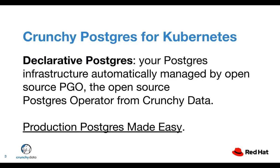Today we're going to be talking about Crunchy Postgres for Kubernetes, our Kubernetes-based solution for managing Postgres. We describe it as declarative Postgres. It's an open source solution — also called PGO — that allows you to streamline the deployment of production-ready PostgreSQL clusters by simply declaring what you want your clusters to look like. Within this solution, we have a declarative API which allows you to define, via a spec, exactly what you want your production-grade PostgreSQL clusters to look like.